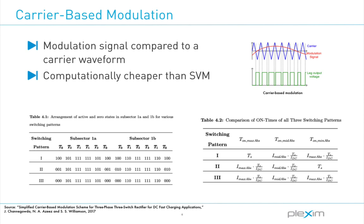In the proposed simplified carrier-based PWM modulation scheme, a control signal is compared with a high-frequency carrier signal of a triangular waveform, which establishes the switching frequency of the converter.